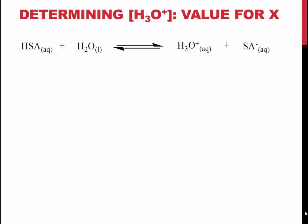The concentration of H3O+, and thereby the value of X, will be found by measuring the pH using a pH meter.